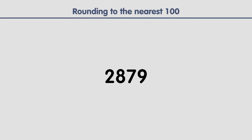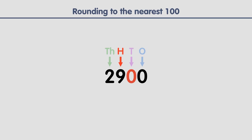Let's look at another example. First, identify the digit in the hundreds place — it's an eight. Then take a look at the digit to the right — it's a seven. Seven is greater than four, so we increase the eight by one, turning it into a nine. Finally, replace the digits to its right with zeros. This is the result.